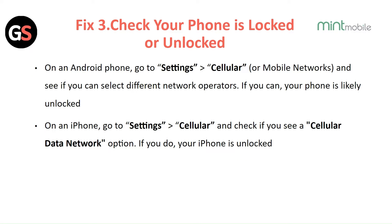Fix 3: Check if your phone is locked or unlocked. On an Android phone, go to Settings, then Cellular or Mobile Network, and see if you can select different network operators. If you can, your phone is likely unlocked. On an iPhone, go to Settings, then Cellular, and check if you see a Cellular Data Network option. If you do, your iPhone is unlocked.